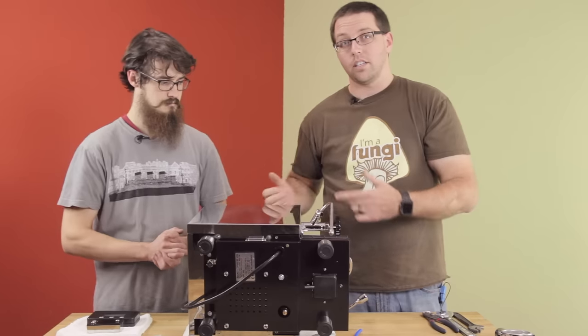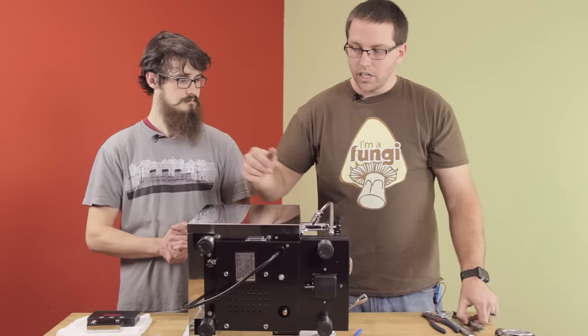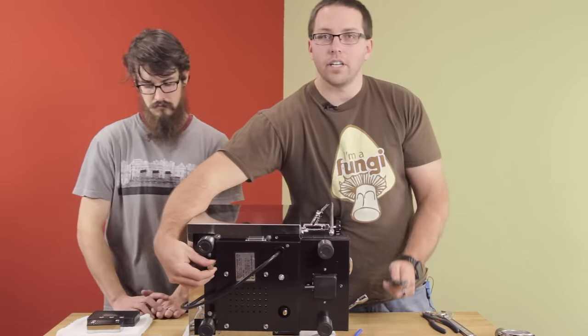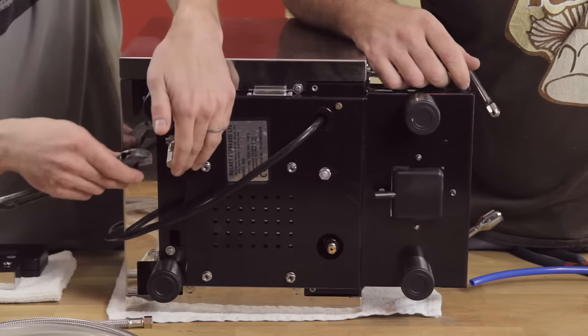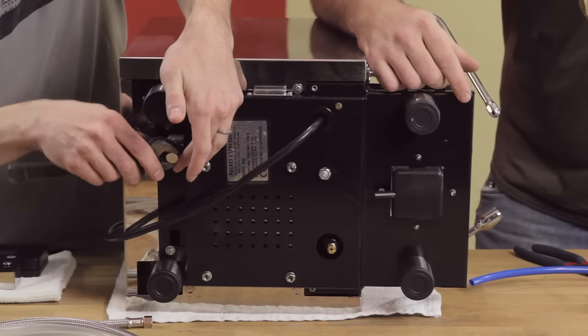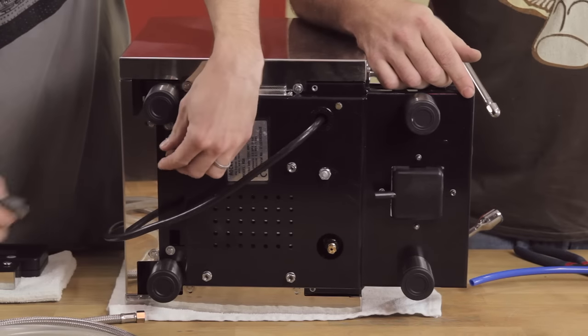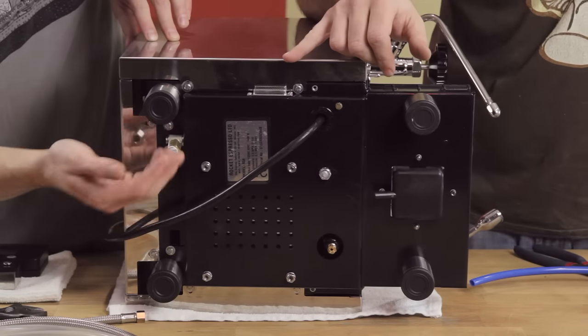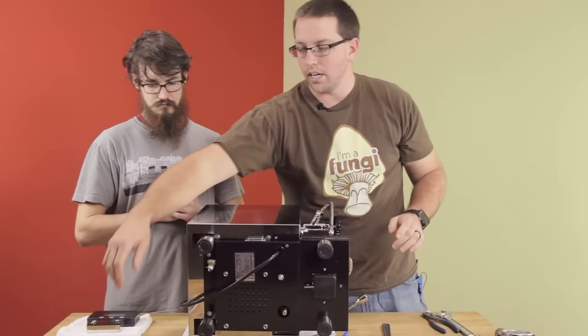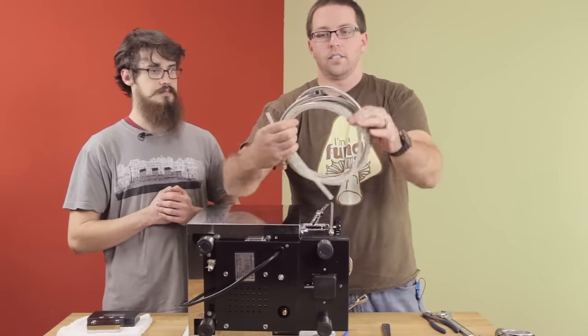What you're going to do is there's actually this little valve down here that rotates. Some of them come with the silver nut, some come with a brass—it all kind of differs to whatever Rocket has in stock that day.